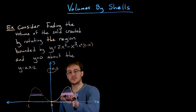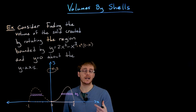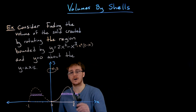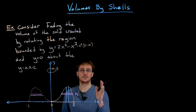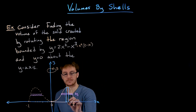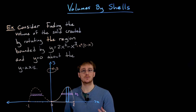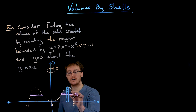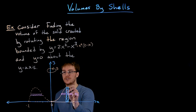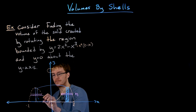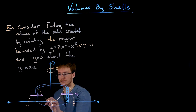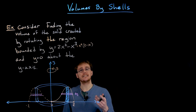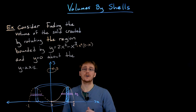With the shell method, instead of taking a horizontal strip and rotating it around the axis of rotation to create a disc or washer, we take a vertical strip — a vertical rectangle — and rotate it around our axis of rotation. When we rotate this vertical rectangle around the vertical y-axis, it doesn't create a disc or washer; instead it creates a hollow cylinder, which we call a cylindrical shell.